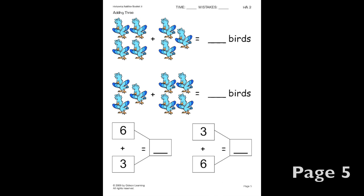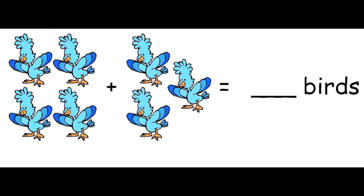Now let's look at some picture problems. We're trying to figure out how many birds we have total. In this problem we have 2 groups: a group of 4 and a group of 3. We need to add both groups together to see how many birds we have total. What is 4 plus 3? 4 plus 3 is 7. So we have 7 birds total.